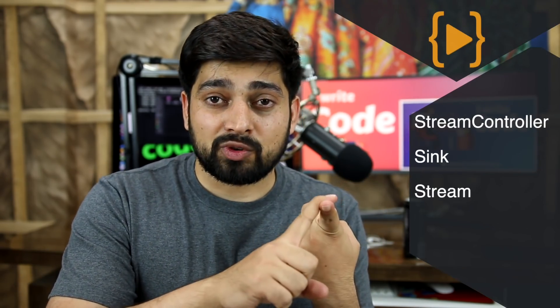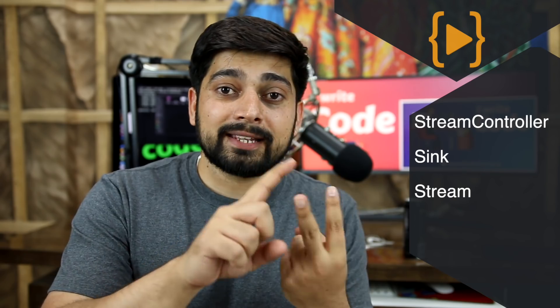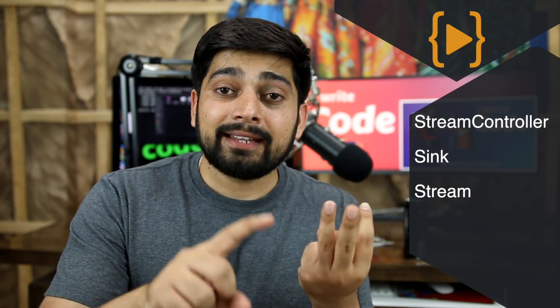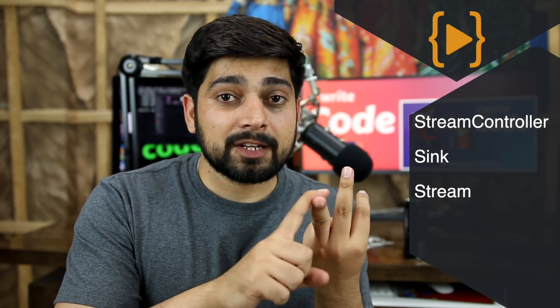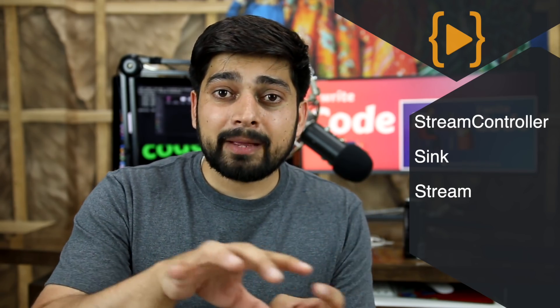Whenever you hear about the BLoC pattern, there are going to be three things that come up again and again. The first one is the stream controller, the second one is the sink, and the third one is the stream. So keep them somewhere in the back of your mind — we're going to come back to them a little bit later.